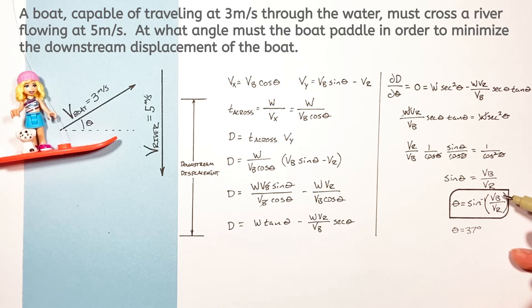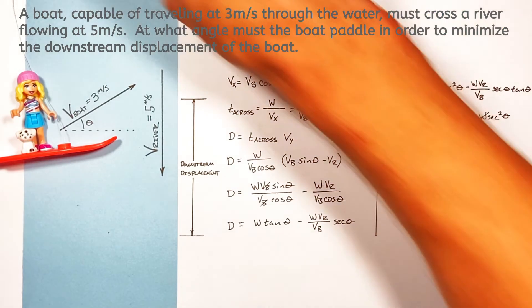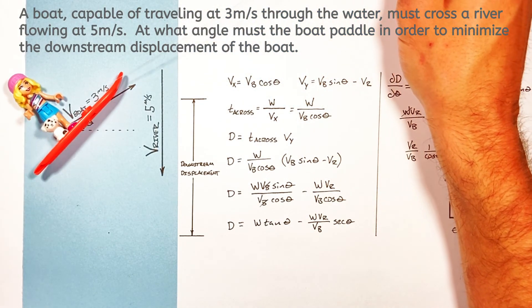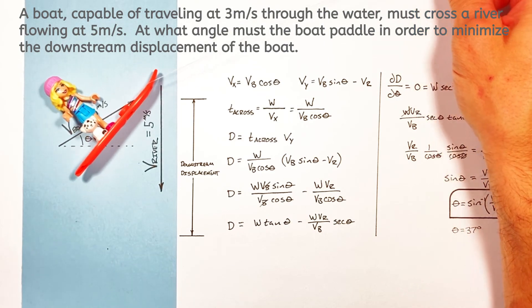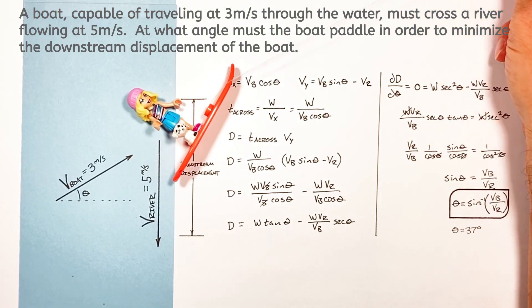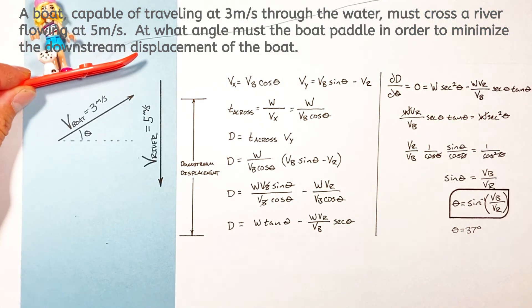Now one thing to point out here is that if the velocity of the boat is greater than the velocity of the river you'll find this kicks out an error or a non real number in your calculator. And ultimately that's because if the boat is going faster than the river it can actually reach an angle where it can just go straight across the river. And we've looked at how to solve that problem in the past.